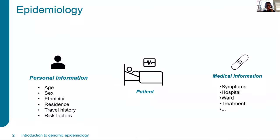So, epidemiology. When you talk about epidemiology, it's kind of putting together the personal information of the patient — like age, sex, ethnicity, where they live, travel history, risk factors — with the medical information from what's happening then and the medical history. So symptoms, which hospital, which ward, which treatment they get prescribed. You try to put together this information to make more sense of what's happening to the patient and the disease.